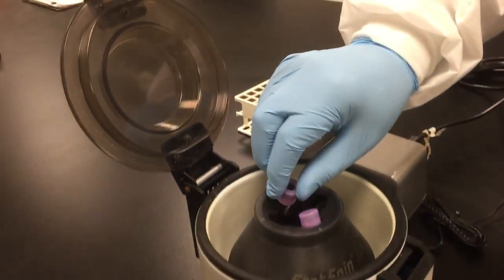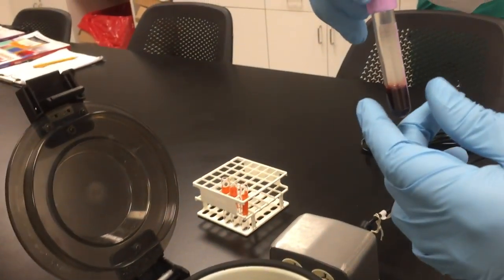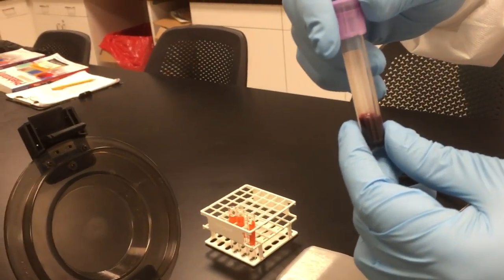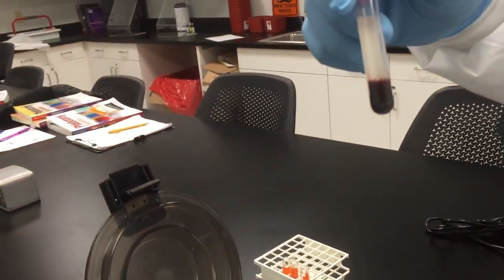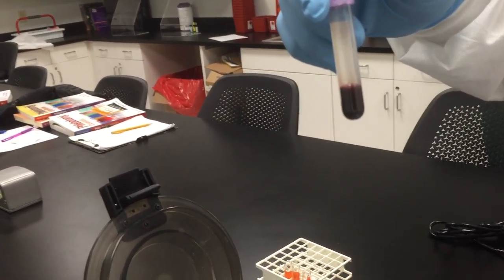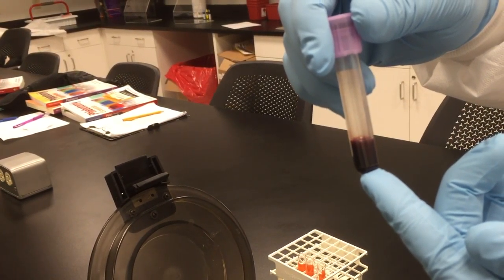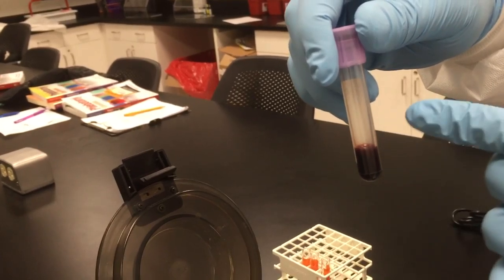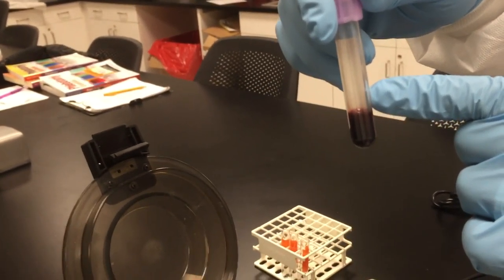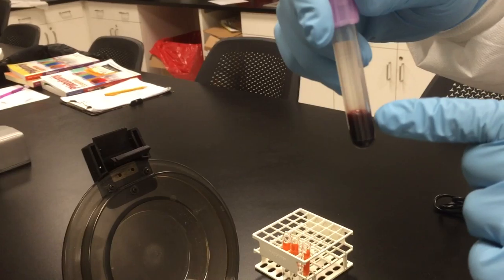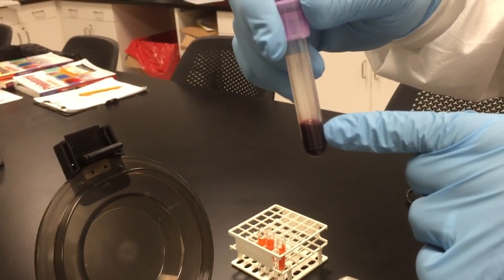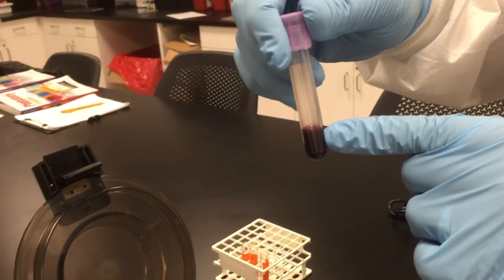You take out your test tubes. And normally, this would be separated. The bottom of the tube would have red blood cells. The top of the tube, because it is a lavender top, would have plasma. And in between would be what is called the buffy coat, which would be less than 1% of the total makeup.